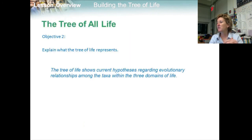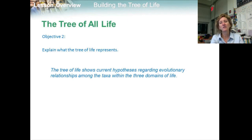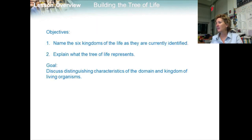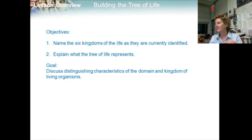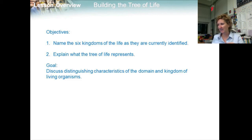To recap: the tree of life shows current hypotheses regarding evolutionary relationships among the taxa within the three domains of life. Our objectives were to name the six kingdoms of life as they are currently identified, and to explain what the tree of life represents — both supporting the goal of discussing distinguishing characteristics of the domains and kingdoms of living organisms.